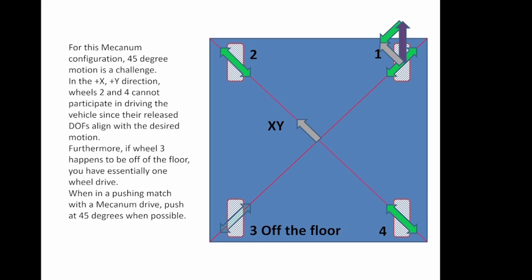In this case, we go back to the situation where wheel number three is off the floor, because your frame is twisted a little or the floor is not level. In which case, notice that wheels two and four, their release degrees of freedom are along the pathway you want to go, which means that wheels two and four cannot contribute to force along that direction because their embedded wheels will just roll.